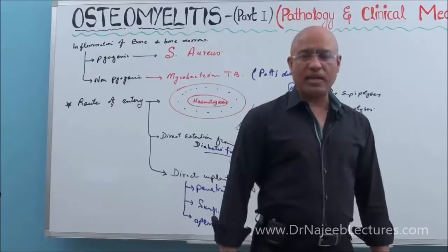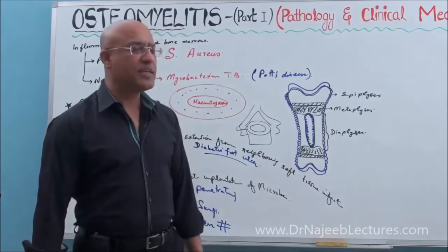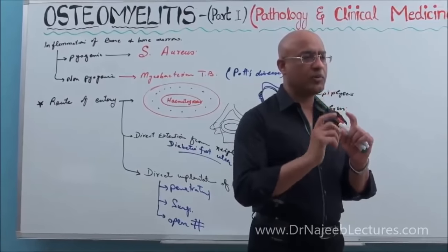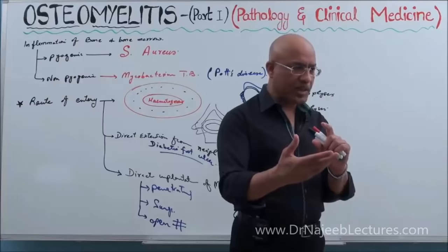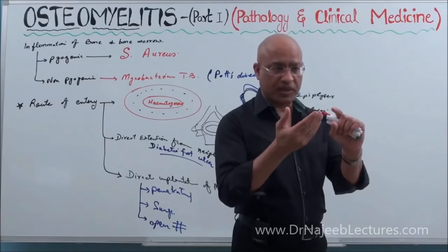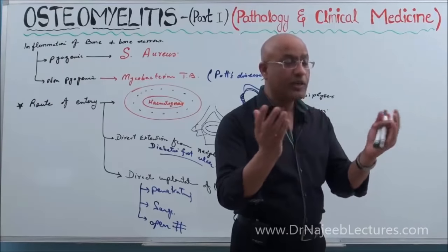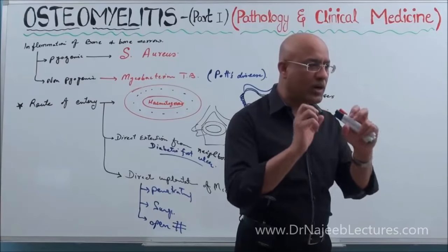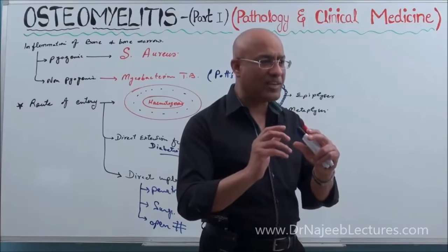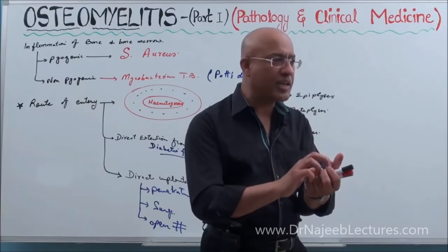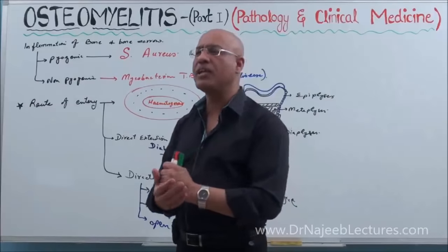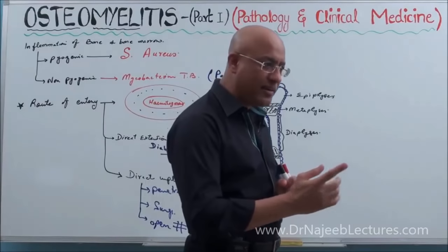A student asked how bacteria destroy the periosteum. The answer is that bacteria like Staphylococcus aureus produce highly damaging enzymes. When bacteria are outside the periosteum, surrounding soft tissue inflammation occurs — neutrophils and macrophages arrive and produce destructive enzymes and oxygen free radicals. If all this is happening in the vicinity of the periosteum for a long time, there is every chance they may damage it. The periosteum is relatively resistant, but not absolutely resistant, to bacterial damage.